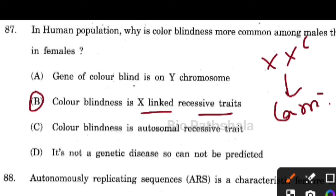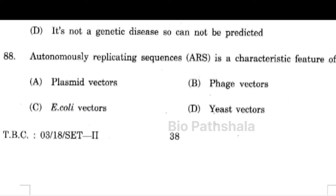So that is why males are more affected by color blindness. Next question: autonomously replicating sequences are a characteristic feature of option number D — yeast vector.